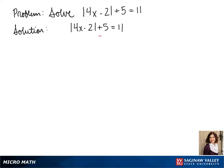So first we want to get the absolute value by itself, so we subtract our 5 to the other side. Now we have the absolute value of 4x minus 2 equals 6.